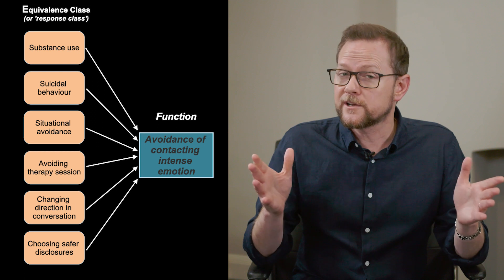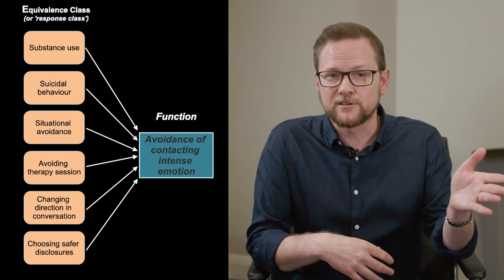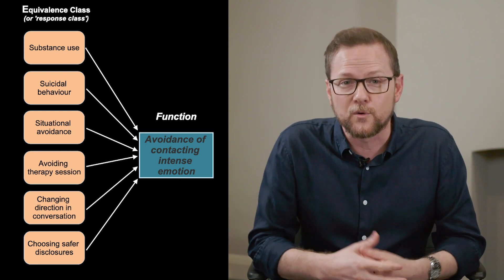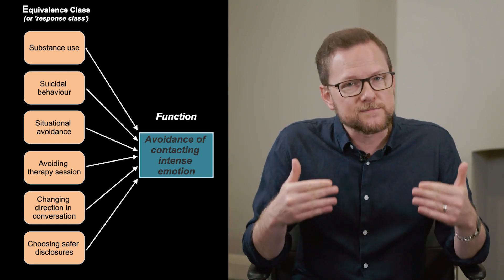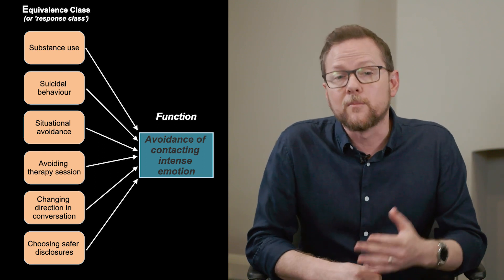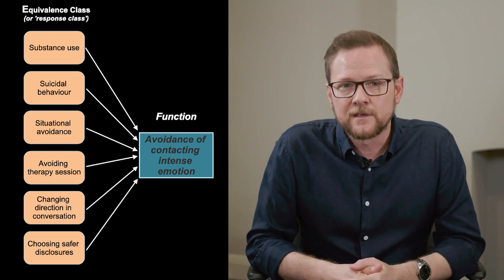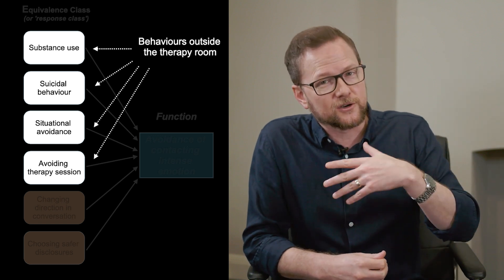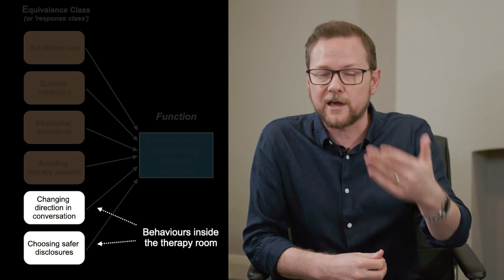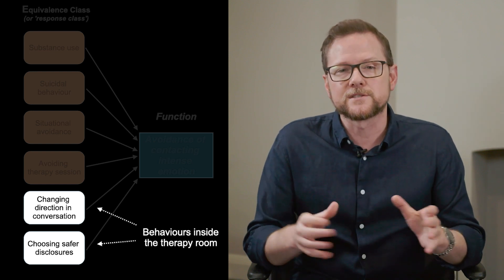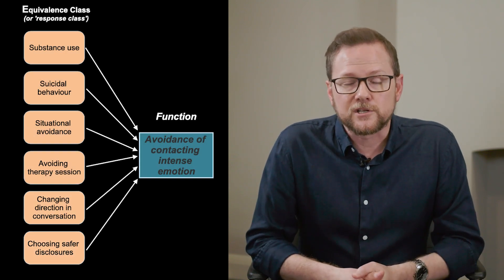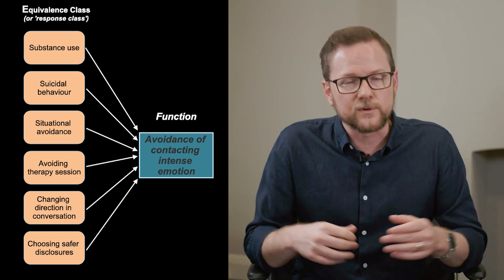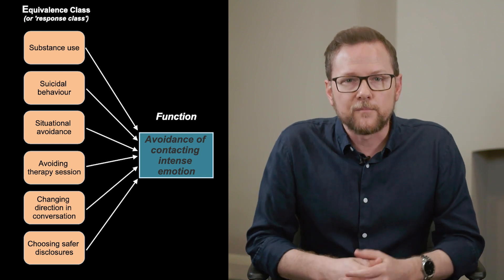All of those behaviours look very different — changing direction in a conversation looks entirely different to self-harm or substance abuse — and yet they may all be functioning to distance that client from emotional experiencing they find aversive. Some of those behaviours occur in the client's life outside the therapy room, and some actually occur inside the therapy room. This is functional equivalence: behaviours which have a different form or topography but share the same function.